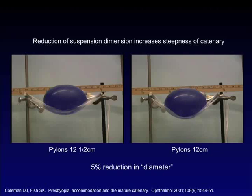By moving the pylons just a little bit closer together — a 5% reduction in diameter — you can see the major change in the shape of the anterior curvature of the lens. I'll show you in a few moments what this looks like in a living person with ultrasound.